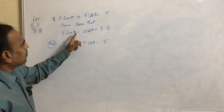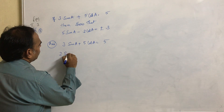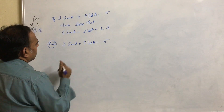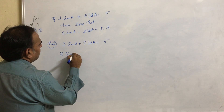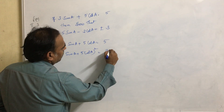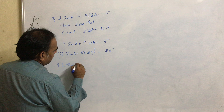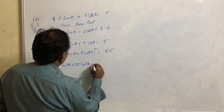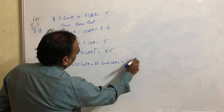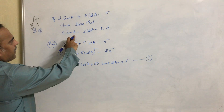To do these type of problems, we have to do square on both sides. So if we do square on both sides: 3sinA plus 5cosA whole square equals 25. This can be written as 9sin²A plus 25cos²A plus 30sinAcosA equals 25. Let us say this is our first equation.